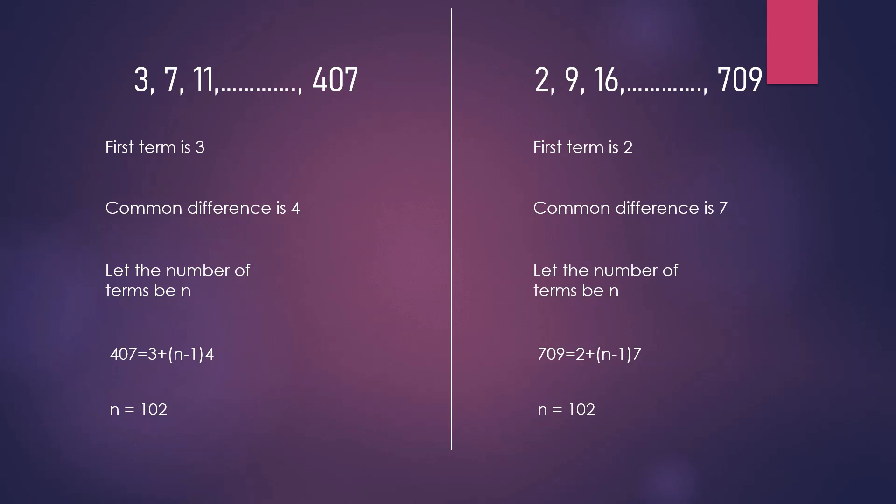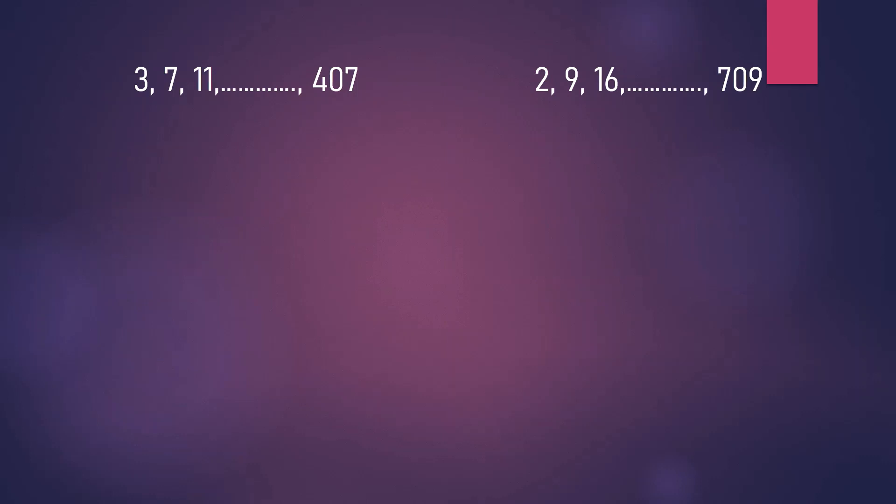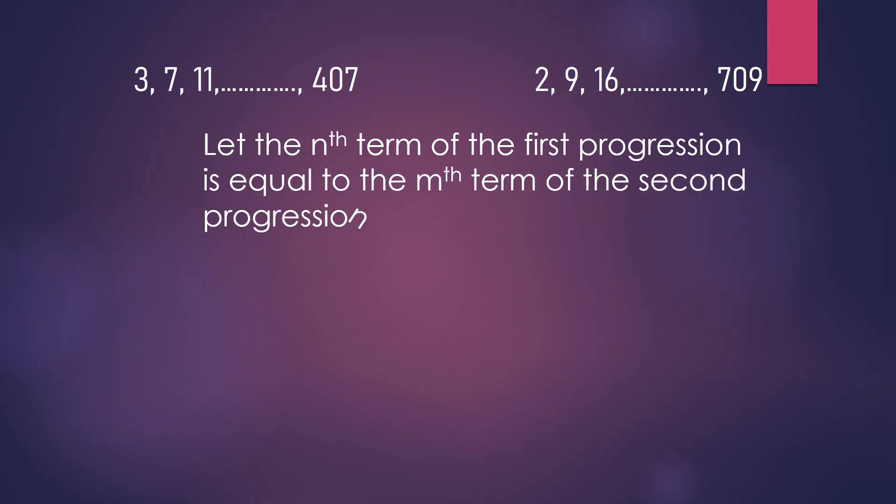Next, we will find the number of common terms. That is, the number of terms which are present in both the progressions. To start, assume that the Nth term of the first progression is equal to the Mth term of the second progression. Equating the expression for these two, we get 4N plus 1 equals 7M.